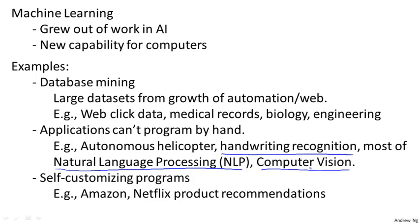Learning algorithms are also widely used for self-customizing programs. Every time you go to Amazon, Netflix, or iTunes Genius and it recommends new movies, products, or music to you, that's a learning algorithm. If you think about it, if you have a million users, there's no way to write a million different programs. The only way to give these customized recommendations is if the software can learn by itself to customize itself to your preferences.